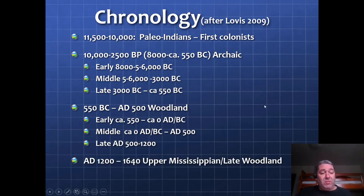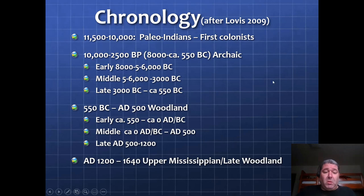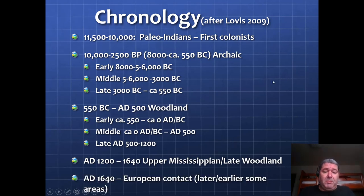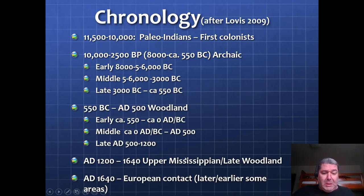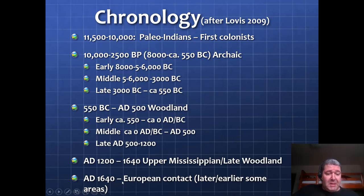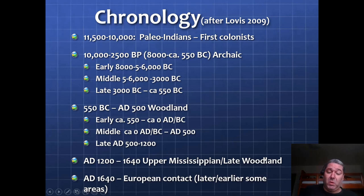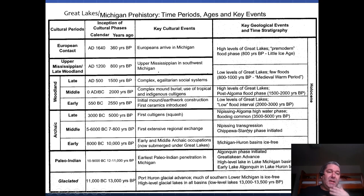And then after that, from 1200 to 1640 — which is contact with European civilizations — we have either the late Woodland or also what's known as the upper Mississippian. Mississippian not being the Mississippian geologic time period, but this time the Mississippian Native American culture. And around AD 1640, that's when we have our first European contact here in the Great Lakes, though it varied from one region to another.